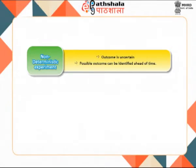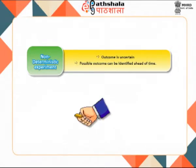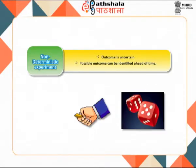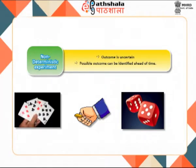On the other hand, a non-deterministic experiment is one where the outcome cannot be known with certainty. The final outcome is uncertain but possible outcomes can be identified ahead of time. An element of chance is involved in such experiments; therefore, they are also called probabilistic experiments. Simple experiments like flipping a coin, rolling a dice, or playing card games are standard examples used for understanding probability because of their uncertain character.